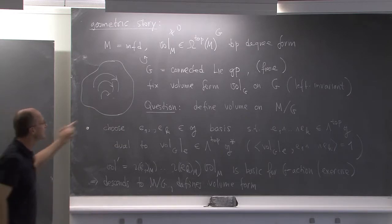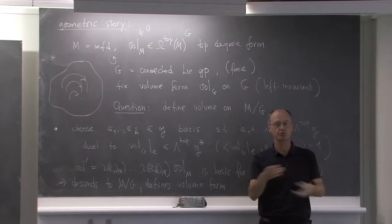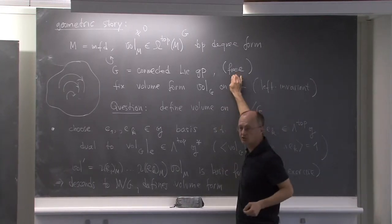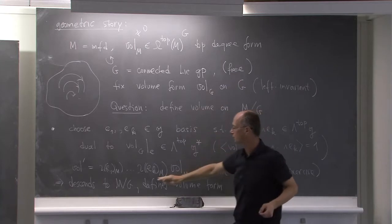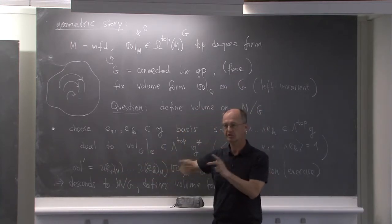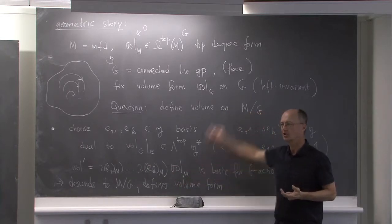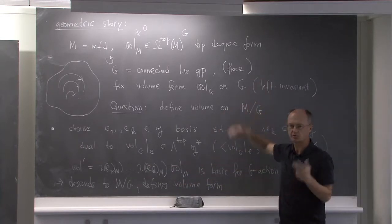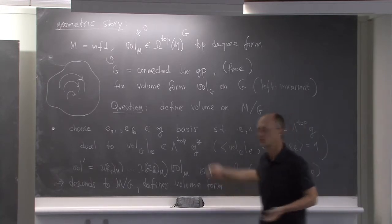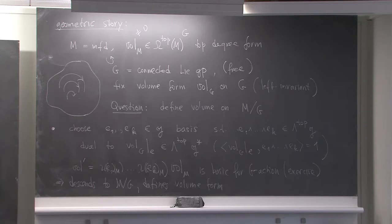Note: if the action is not quite free, if there are some points where there is a kernel, then at those points this form would vanish. In general it still defines a top-degree form even if the action is not free, but it may vanish somewhere. If the action is free, it will be a non-vanishing top-degree form.